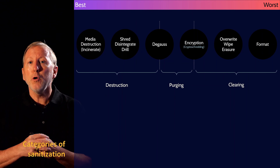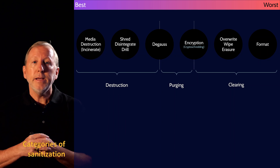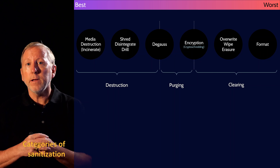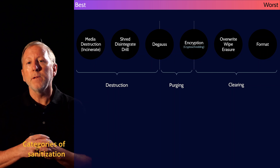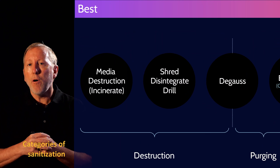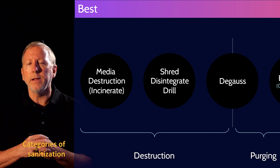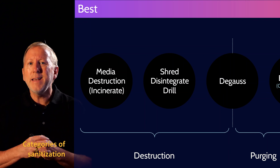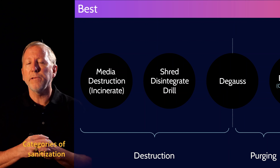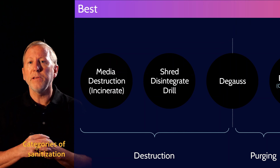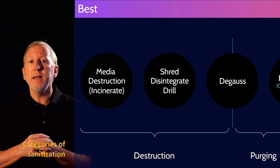Destruction, purging, and clearing. Each type includes one or more methods. Destruction involves physically destroying the media that the data is stored on by melting it, incineration, breaking it into pieces, shredding, or disintegration, or by causing phase transition of the material — degaussing. Physical destruction of media is the best way to delete data.